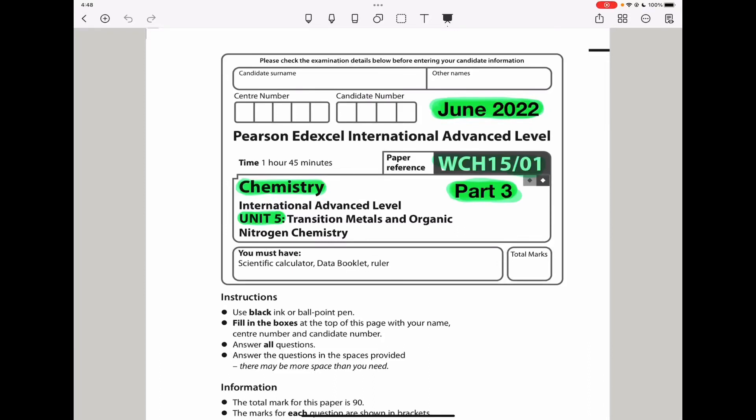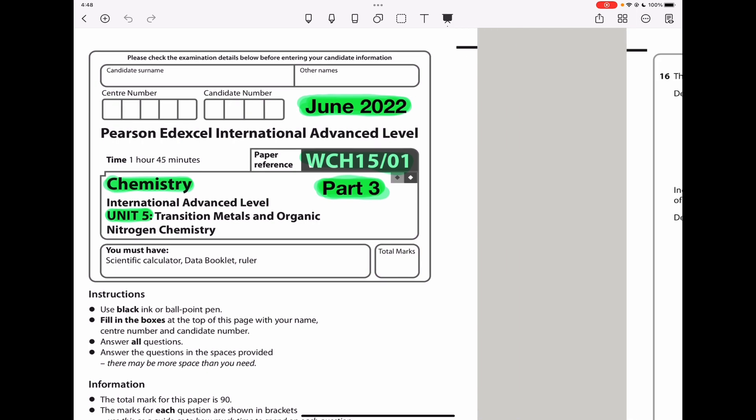Welcome to the Chemistry, Biology, and Math Revision Hub. Today, we are doing the Pearson Edexcel International A-Level Chemistry Unit 5 for June 2022. This is the Part 3 video. I'll put the link to the Part 1 and Part 2 video below the discussion box.